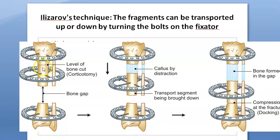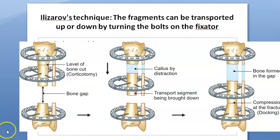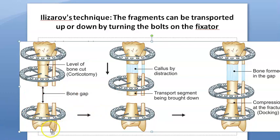With the Ilizarov technique, there is a bone gap on top; they do a bone cut and pull the bone down. Callus is formed by distraction and new bone forms at one site, while at the other end compression causes docking. The shortening is resolved and new bone is achieved — this is the Ilizarov technique using external fixation.